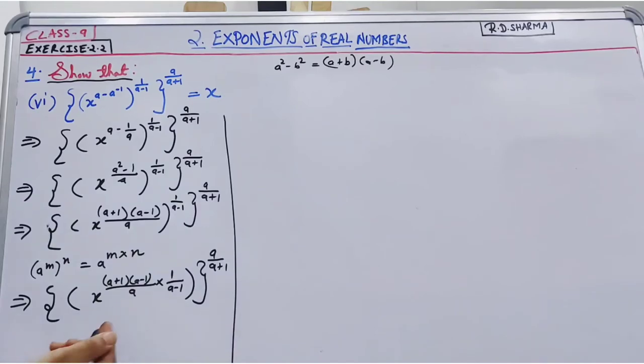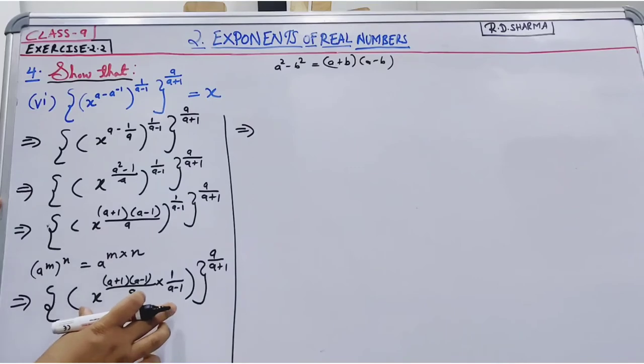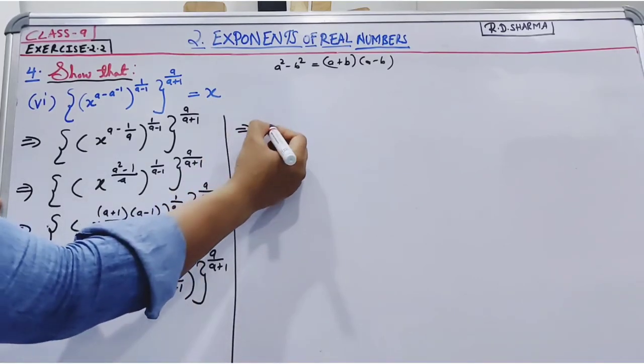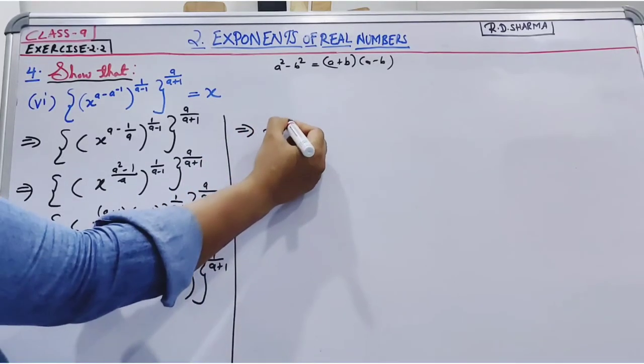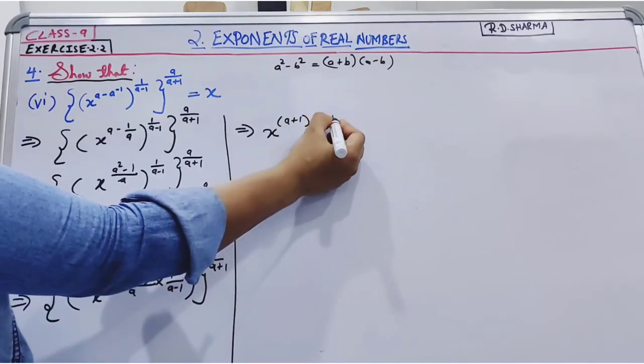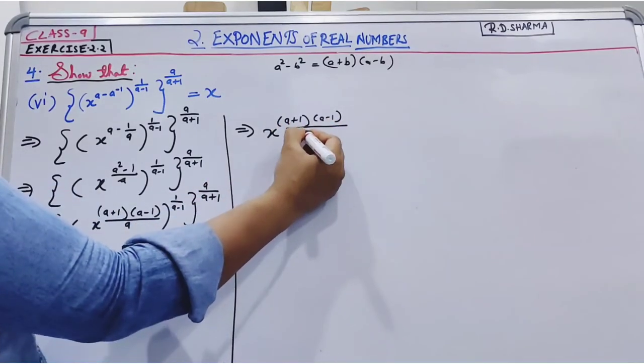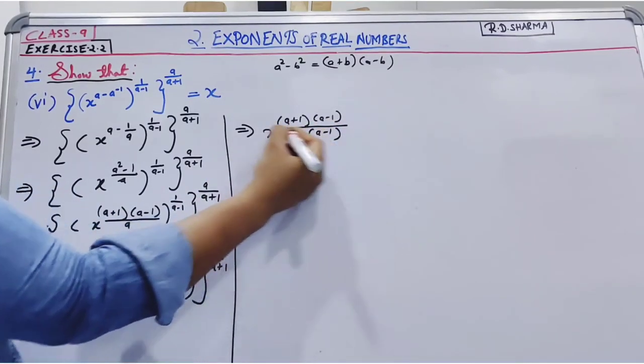So our next step is this equals x to the power a plus 1, a minus 1 into 1, 1 will remain, and a multiplied is a, a minus 1.